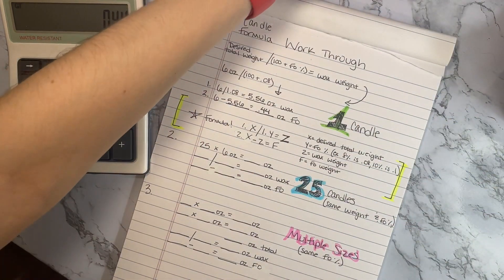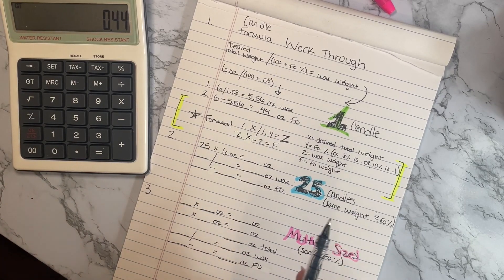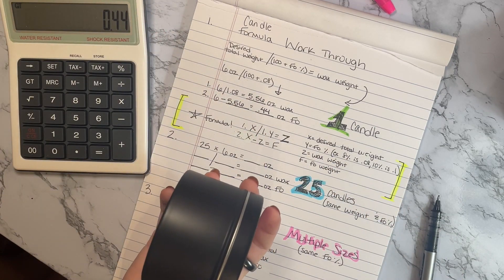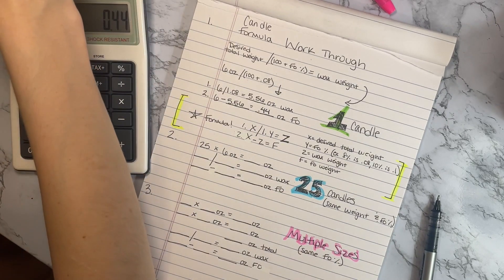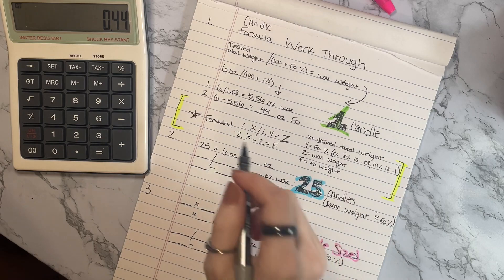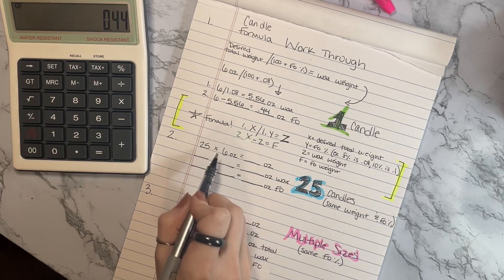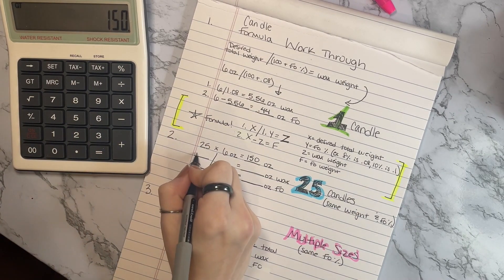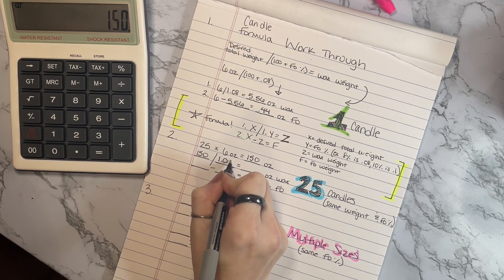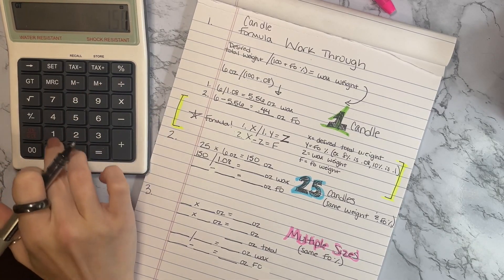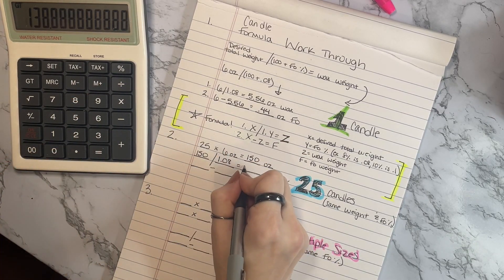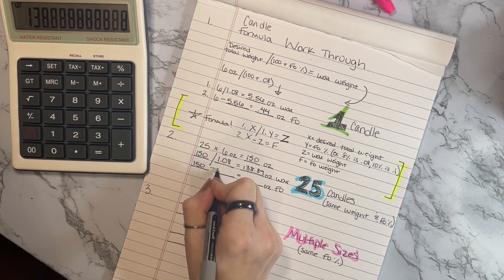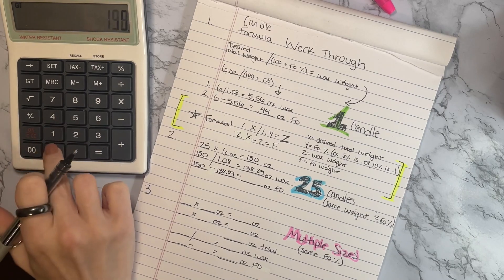The second part: say you want to make a bunch of the same size candles. Let's say you've got a whole bunch of eight ounce tins and you want to make 25, just for example. This will work for anything. 25 times 6 ounces is 150 ounces. Now you do 150 ounces divided by 1.08, which is 138.89. Now we're going to do 150 minus 138.89, which equals 11.11. So it's 138.89 ounces of wax and 11.11 ounces of fragrance oil.